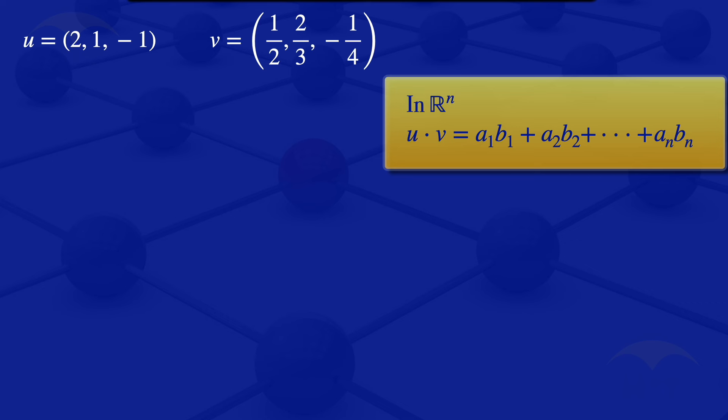So for our inner product u · v, it will be the first element of u multiplied by the first element of v—2 times 1/2—then the second element, 1 times 2/3, then the third element, -1 times -1/4. That simplifies to 1 + 2/3 + 1/4, and the result is 23/12.